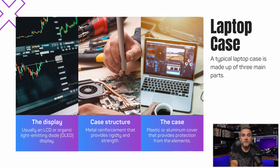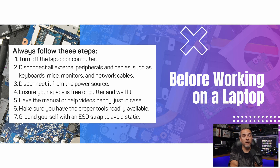When working on or repairing a laptop, you will notice that it consists of three main parts: usually an LCD or OLED display, some type of metal reinforcement to improve durability, and a plastic or aluminum cover that protects the internal components from external elements. Before you begin working on a laptop or even a desktop, start by turning it off and disconnecting all external peripherals and cables, including keyboards, mice, monitors, and network cables. Also disconnect it from the power source — at no point should you work on a computer while it is still connected to power or turned on.